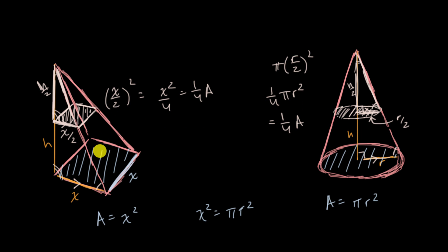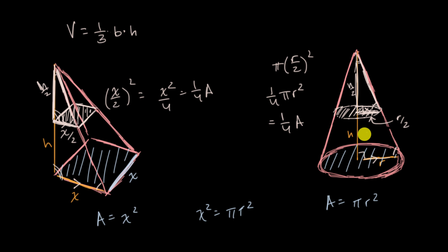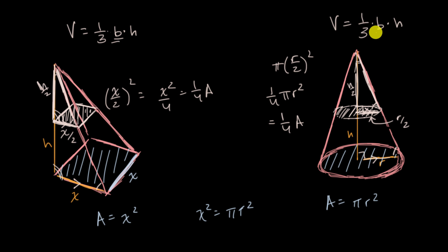What's interesting about that is it allows us to take the formula — which we've proven and gotten intuition for in other videos — for the volume of a pyramid: volume equals one-third times base area times height. And we can say this cone must have the exact same volume. It must also be volume equals one-third times the area of the base times the height, because in both cases the area of the base is the same, the height is the same, and we know they have the same volume.